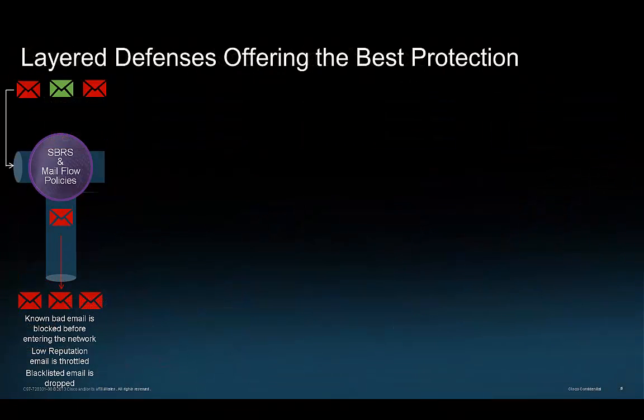Layering the email security defenses starts with the sender-based reputation services and our mail flow policies. This is where we block the known bad senders of email and throttle senders whose reputation is poor but not bad enough to block.